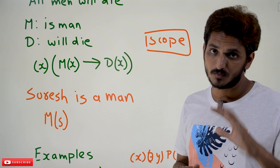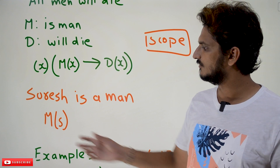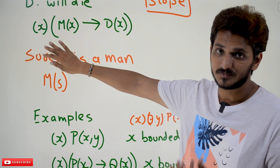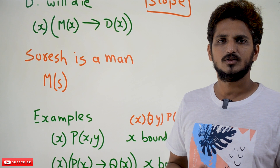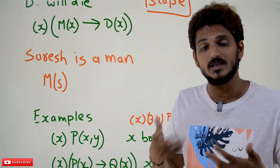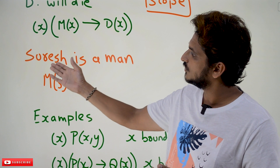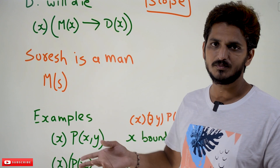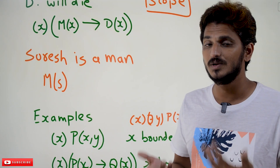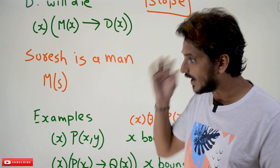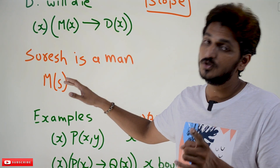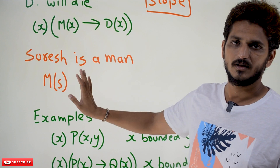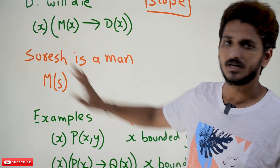Variables that are not bounded by any of the quantifiers, we call them free variables. One more important point: here Suresh is a subject and we named that subject with variable name s. You can give any variable name — not only s. Some may give u or h as a variable name for Suresh. You can give any variable name, that is not a problem. By changing the variable name it is not going to affect anything — you can give any variable name for a subject.